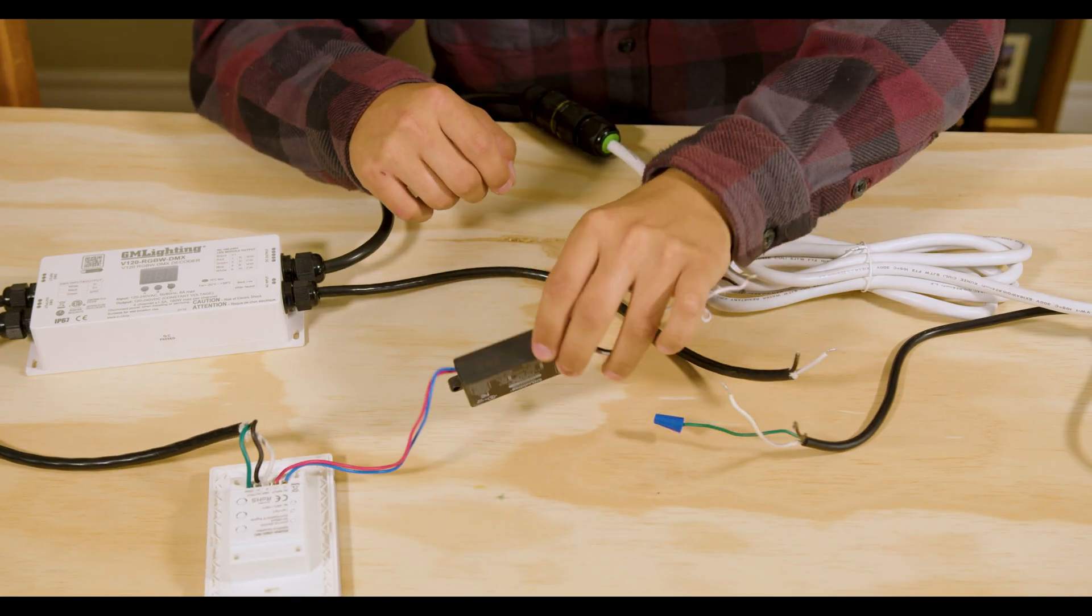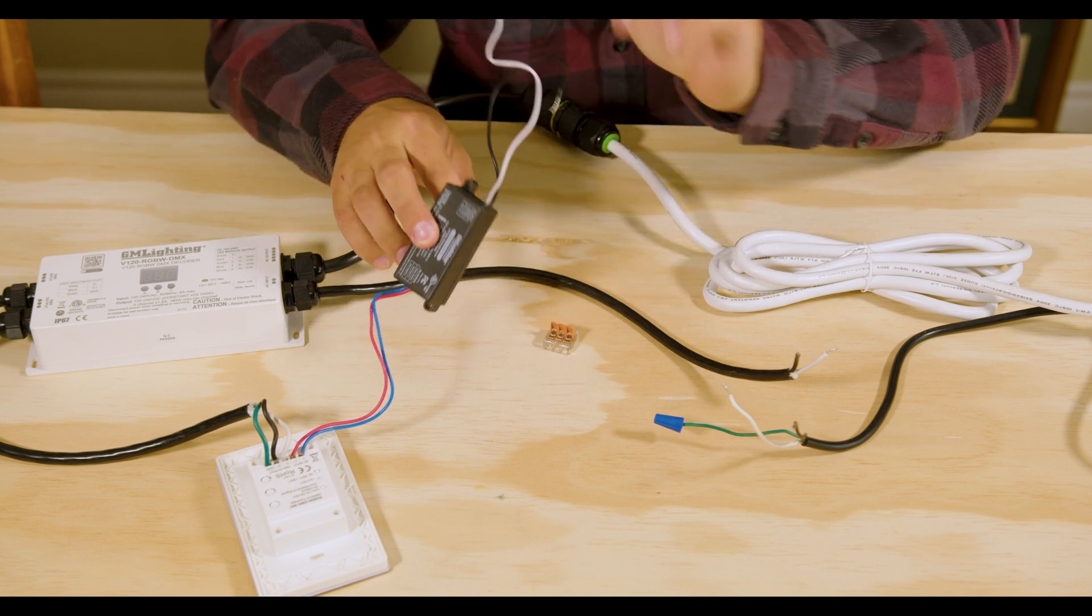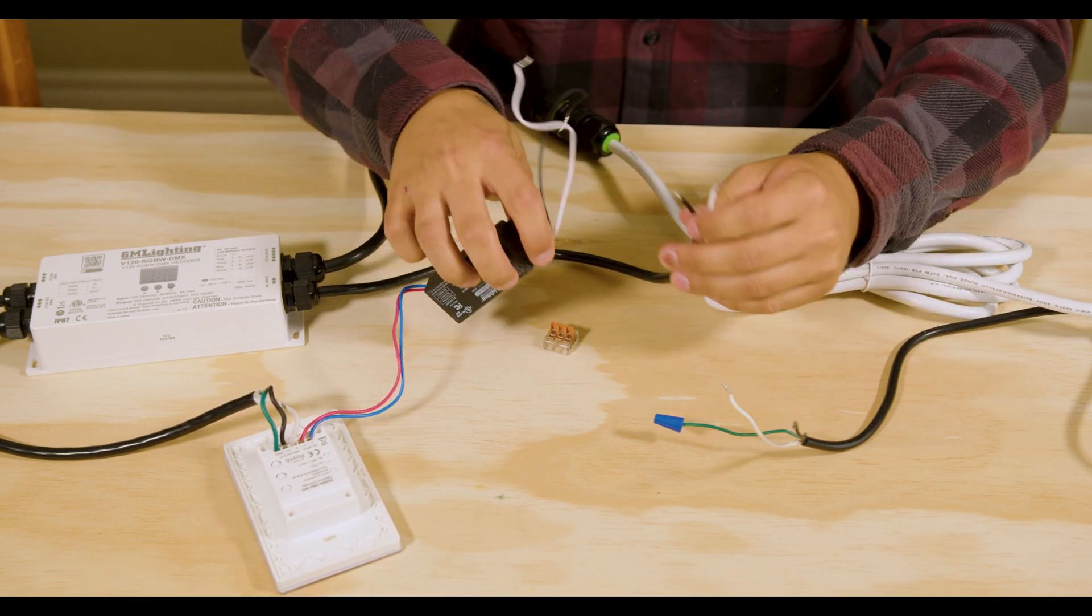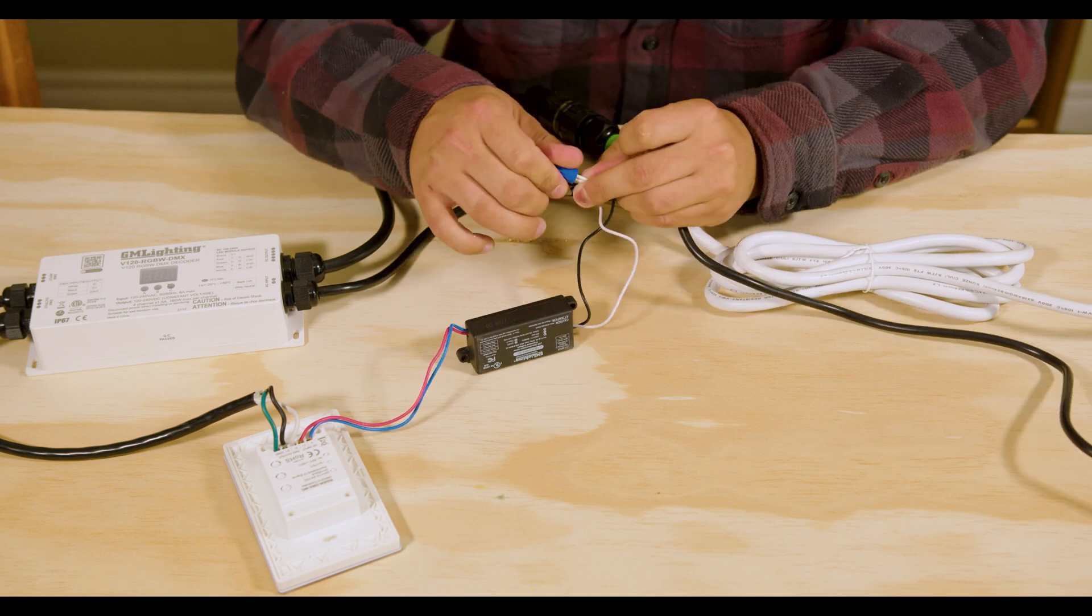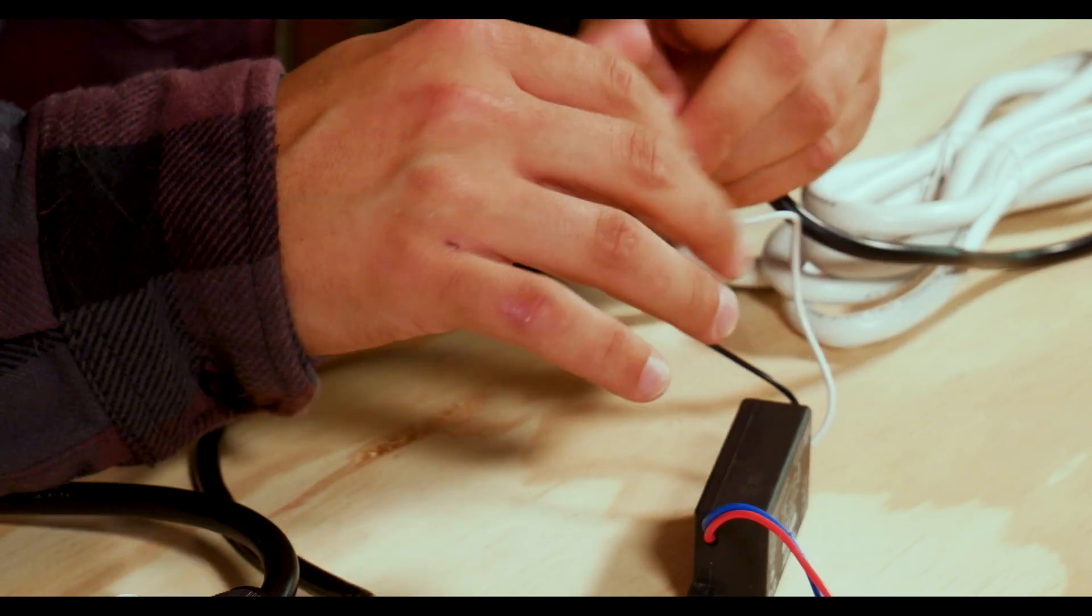Step 3. Connecting the AC input. This connects the DMX decoder to the wall controller's transformer. Connect the wires coming in from the 120 volt to this transformer.